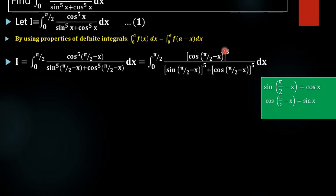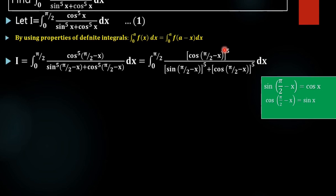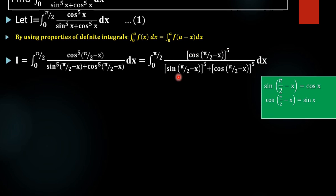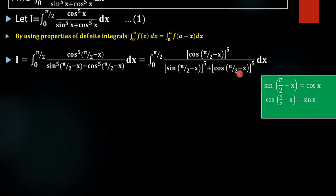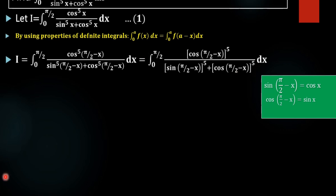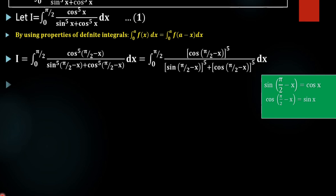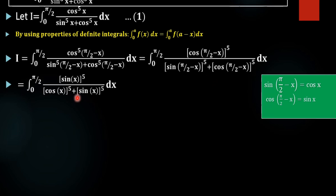Just as cos⁵x can be rewritten as (cos x)⁵, we rewrite cos(π/2 minus x) whole raised to 5 and sin(π/2 minus x) whole raised to 5. Now, cos(π/2 minus x) equals sin x, and sin(π/2 minus x) equals cos x. On rewriting, we get (sin x)⁵ divided by (cos x)⁵ plus (sin x)⁵.